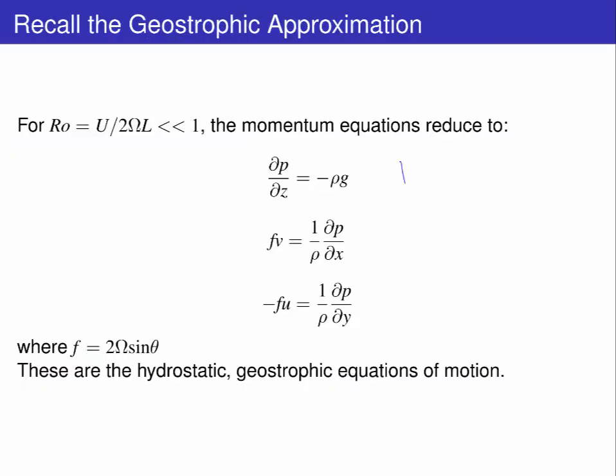We begin by recalling the geostrophic approximation. In the vertical, the fluid is hydrostatic, and in the horizontal, the Coriolis force is balanced by the across flow pressure gradient.